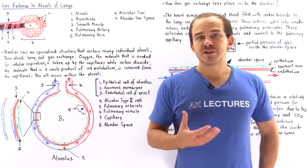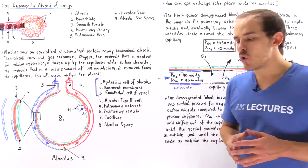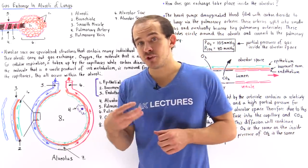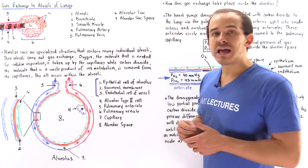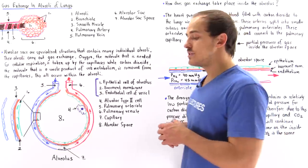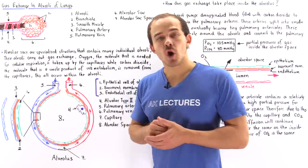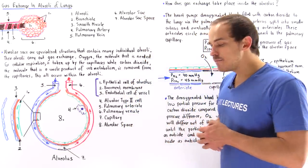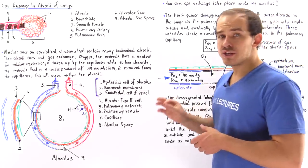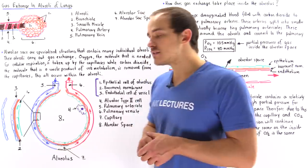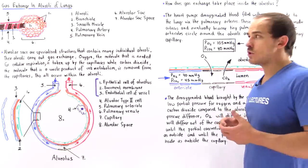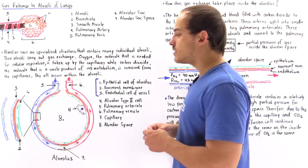Inside our lungs, we have specialized structures called alveolar sacs, and these alveolar sacs contain many tiny balloon-like structures called alveoli. Within the alveoli is where gas exchange actually takes place — oxygen is exchanged for carbon dioxide. Before we discuss how the process of gas exchange takes place within each individual alveolus, let's discuss the structure of the alveolar sac and what the individual alveolus actually looks like.